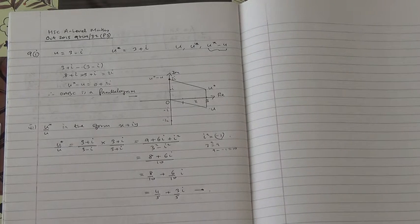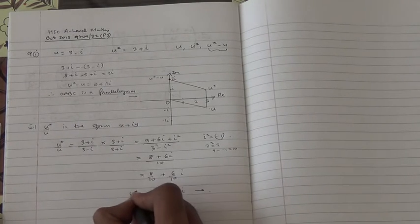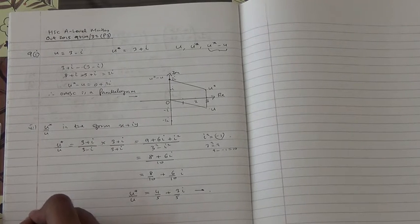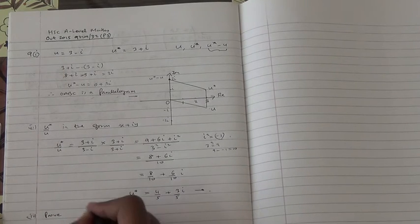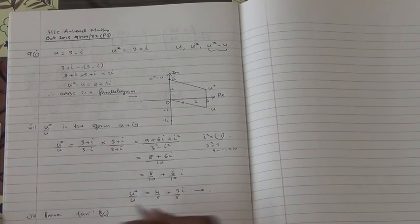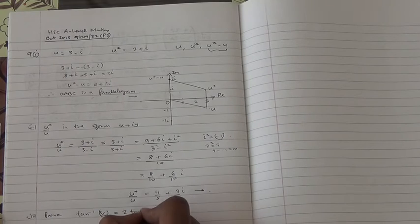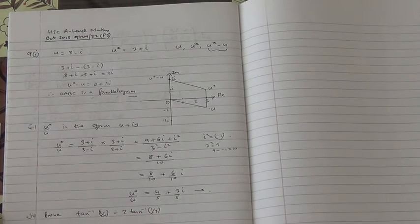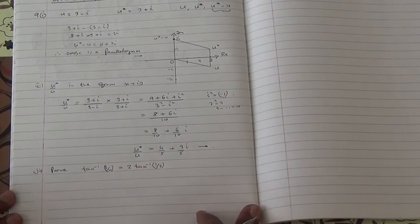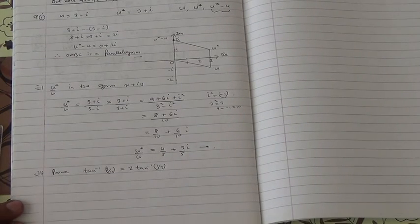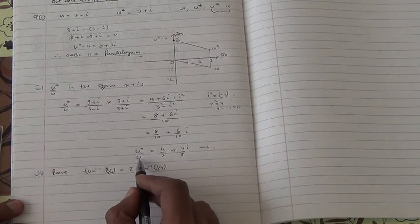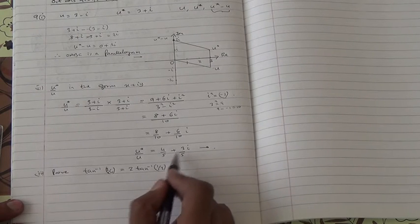Now for the third part. By considering the arguments u star over u, we need to prove. We need to prove that inverse tan of 3 quarter is the same as 2 inverse tan of 1 third. So how are we going to do this? Basically, it's not that difficult if you think about it.